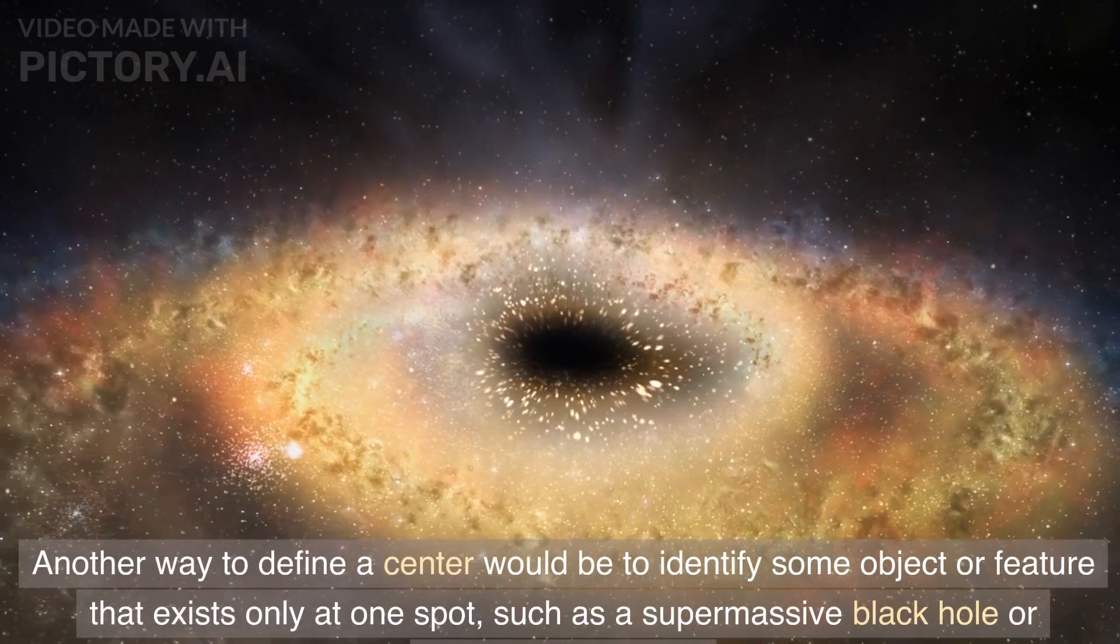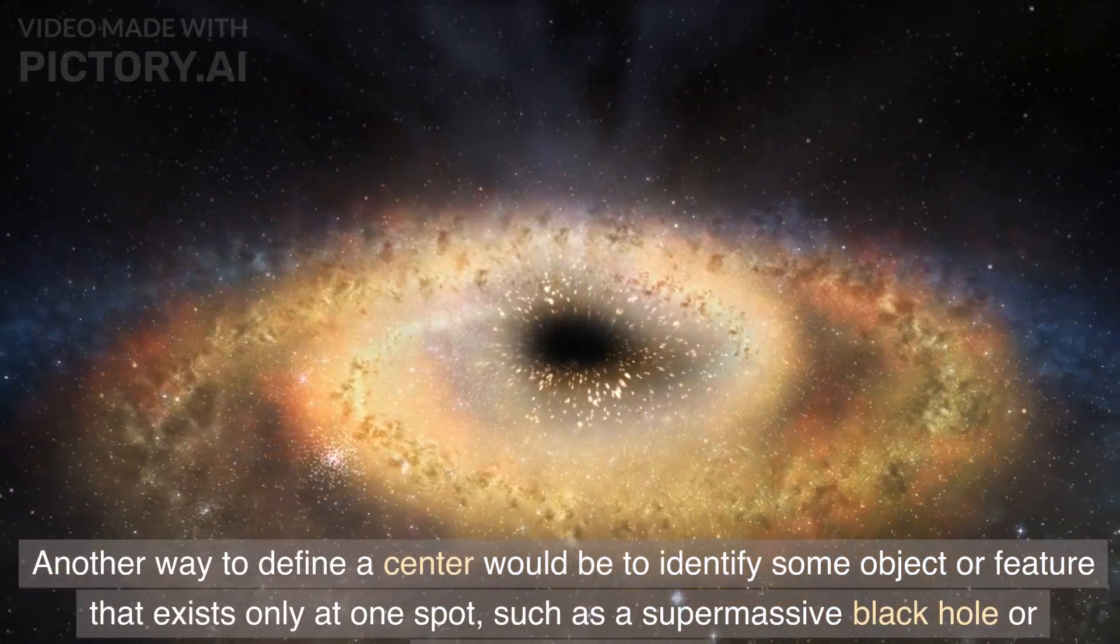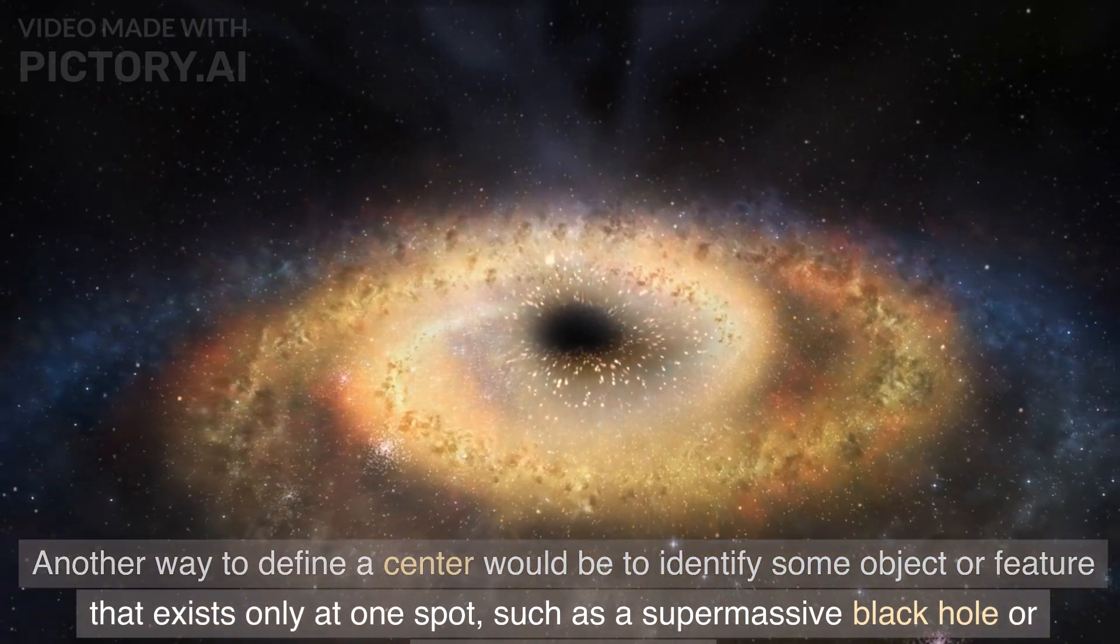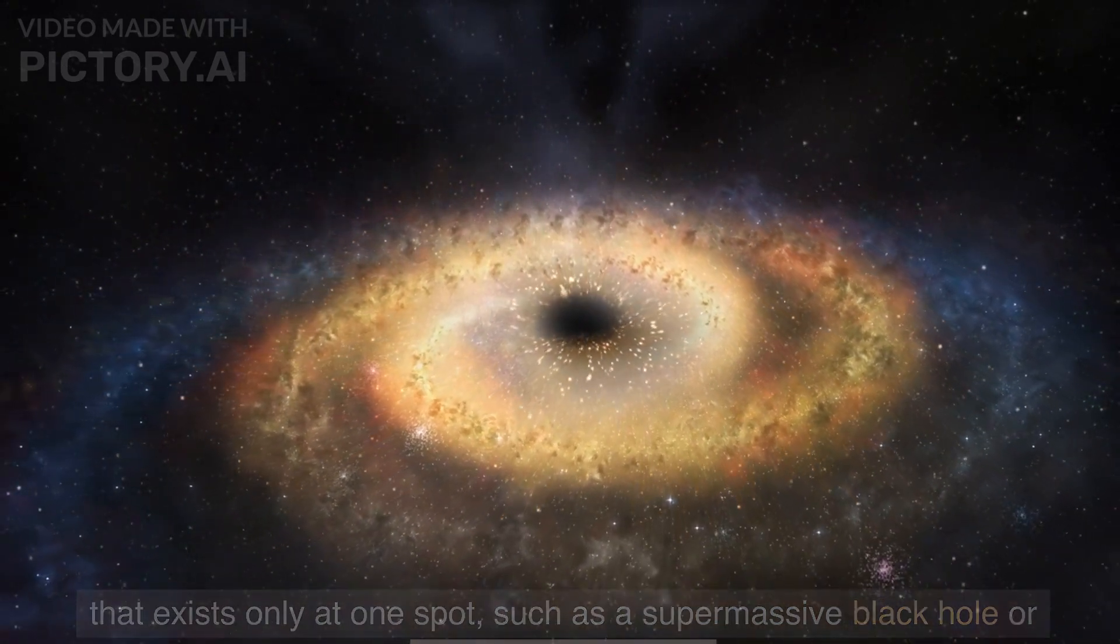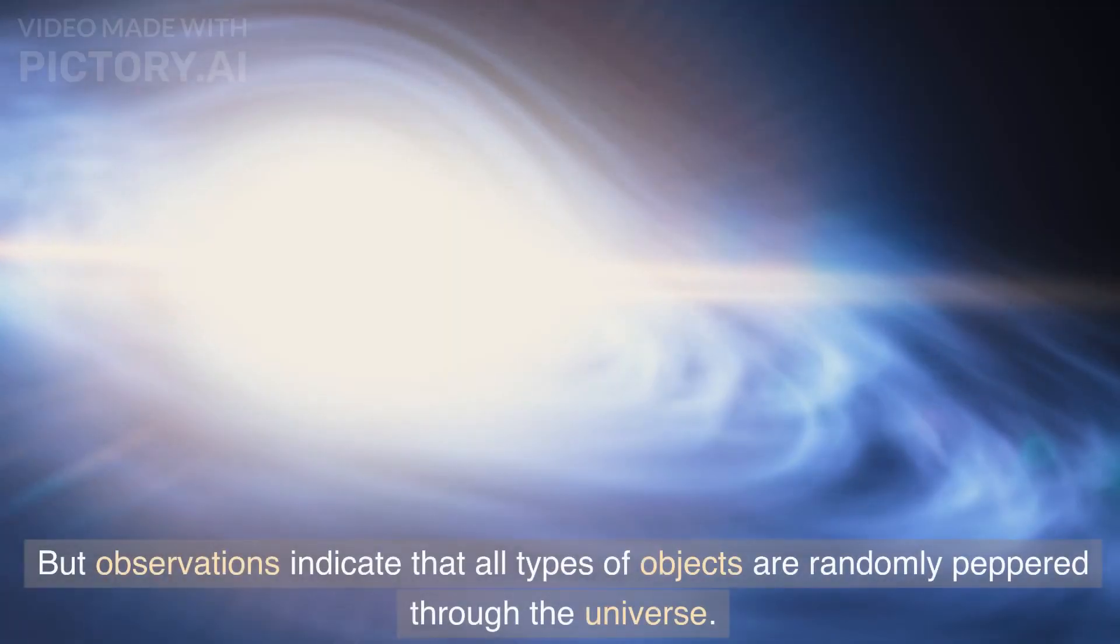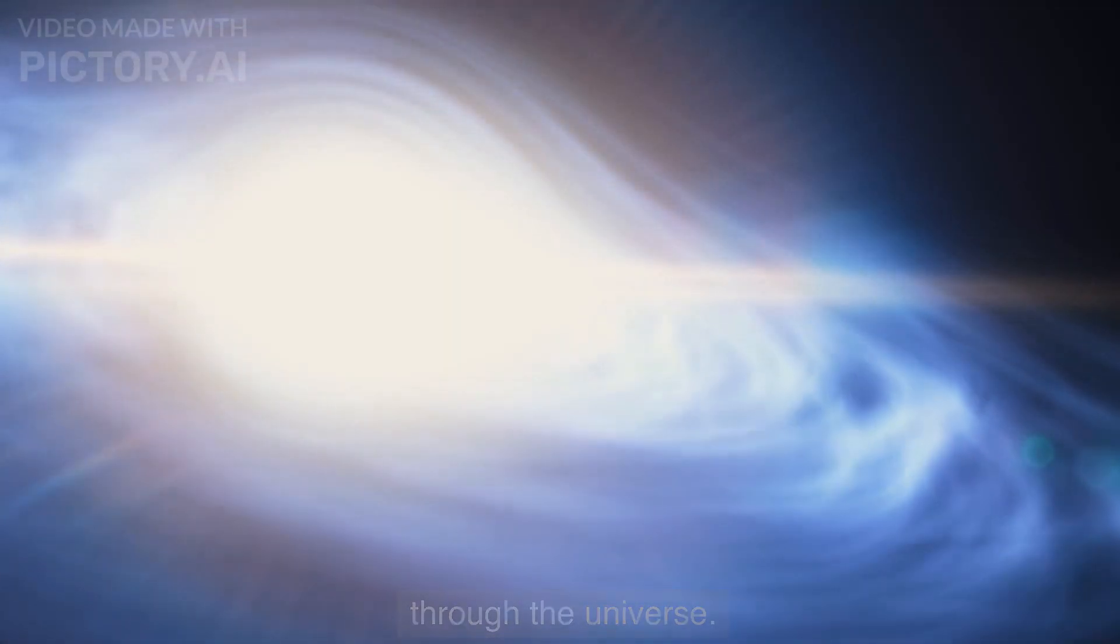Another way to define a center would be to identify some object or feature that exists only at one spot, such as a supermassive black hole or superlarge nebula. But observations indicate that all types of objects are randomly peppered through the universe.